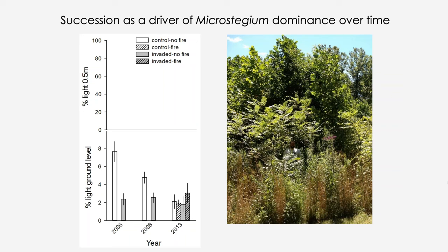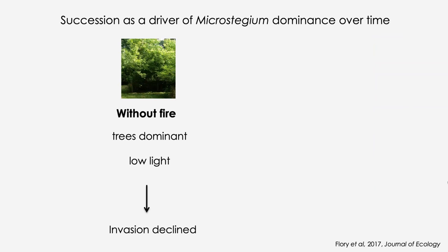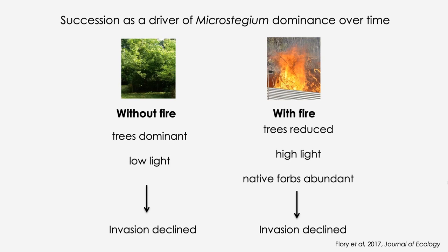Looking at light availability at ground level, we see very low light in invaded compared to uninvaded plots in 2006 and 2008, but no difference in 2013. At half a meter, we see low light in invaded plots in 2006, but in 2008 actually more light in the invaded plots — likely because the invader suppressed native species that would otherwise be taller. In 2013 we see no difference due to invasion but much more light availability when fire was applied. Without fire, trees became highly dominant, light availability dropped, and the invasion declined; when we added fire, tree abundance and size were reduced, resulting in high light, abundant native forbs, and decline of the invasion.